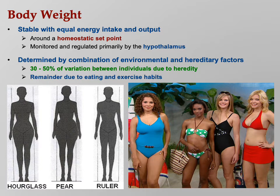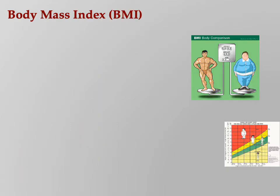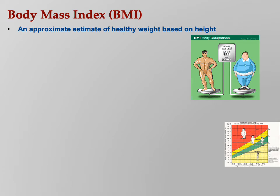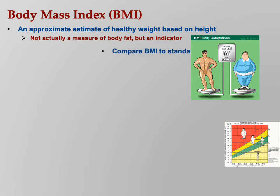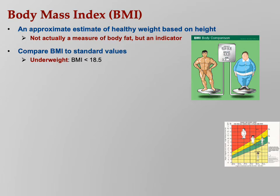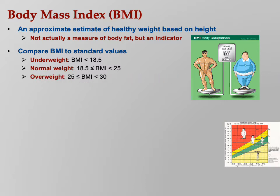Body mass index is an approximate estimate of healthy weight based on height - it doesn't actually measure body fat but is an indicator. You compare your BMI to standard values. You can look at tables, just Google it - you'll see online tables with height along one axis and weight along another. Find the intersection and there's your BMI. If you're under 18.5 you're officially underweight, 18.5 to 25 is normal, 25 to 30 is overweight, 30 to 40 is obese, and over 40 is morbidly obese.